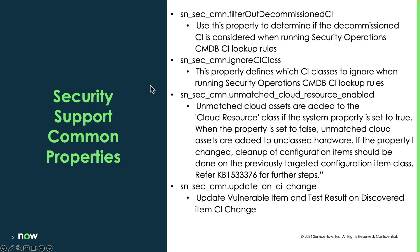Now we're going to talk about security support common properties. These are probably the more important ones when dealing with CI matching. The first one is filter out decommissioned CI — if enabled, this is not going to include any CIs that have been decommissioned. So if you have a server with install status or operational status set to retired and the scanner still finds it, it's going to create a new CI — a new unclassified hardware record or incomplete IP record. This is really dependent on the customer's internal process for how they handle retiring CIs.